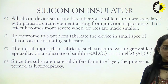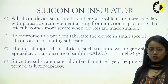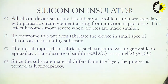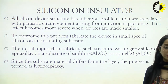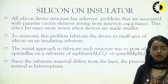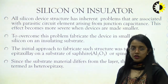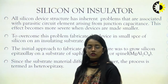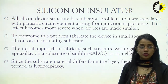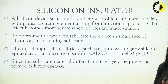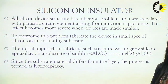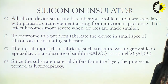We can also study silicon on insulator. We sometimes need to epitaxially grow a layer of silicon on some insulator. All silicon device structures have an inherent problem associated with parasitic circuit properties arising from junction capacitance, and this becomes more severe when devices are made smaller. To overcome this, we fabricate devices in smaller pieces of silicon on an insulating substrate. The initial approach was to grow silicon epitaxially on a substrate of sapphire — Al2O3 — and spinel — MgAl2O4. Since the substrate material differs from the layer, the process is termed heteroepitaxy.